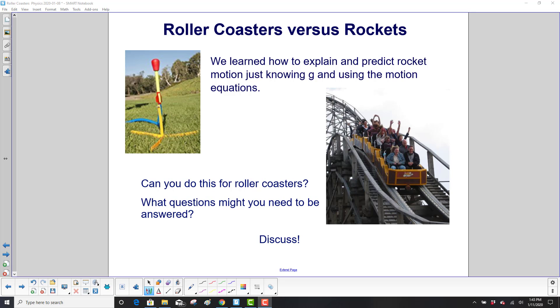We learned in the last unit how to explain and predict rocket motion just knowing the value of g and using our motion equations. Another name for that is kinematics. Can you do this for roller coasters? What questions might you need to be answered? Think about it or discuss.